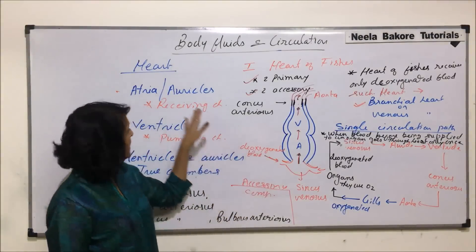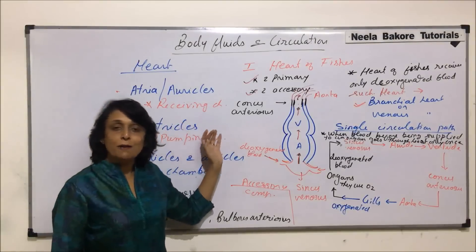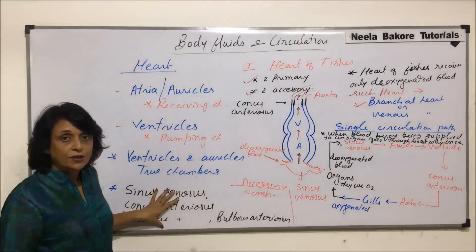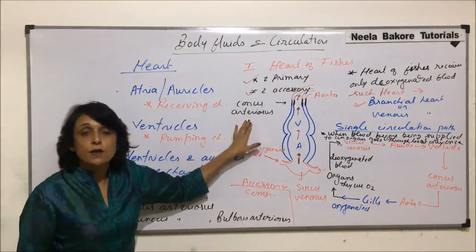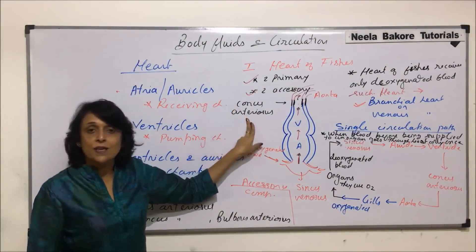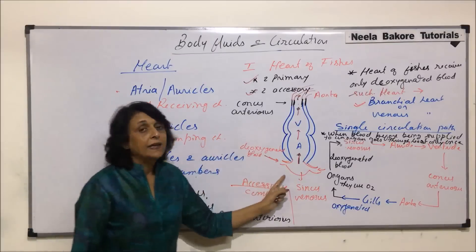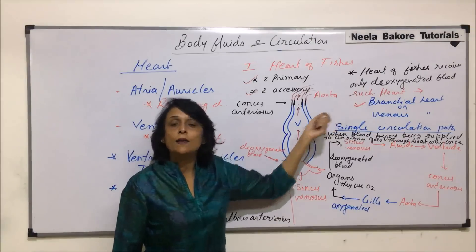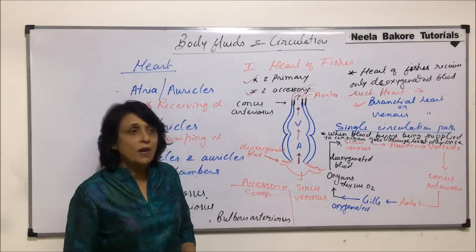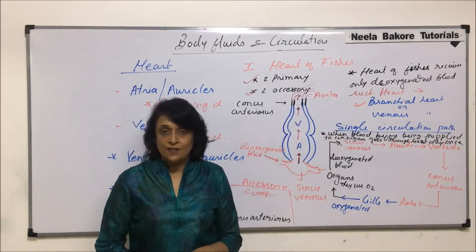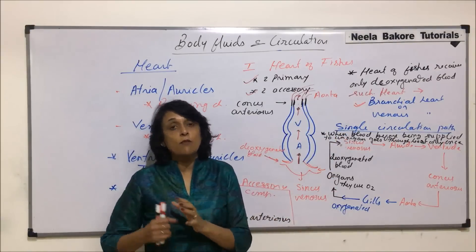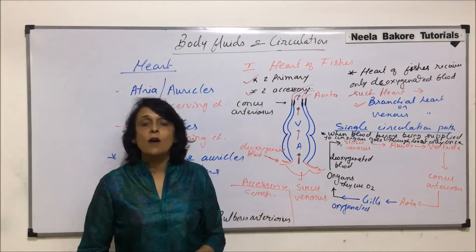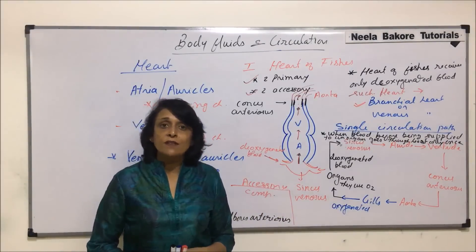To summarize: the heart has receiving compartments (auricles) and pumping compartments (ventricles) as primary chambers, and there are accessory chambers. In fishes, both primary chambers are present and the circulation is single circulation. Such a heart that receives only deoxygenated blood is known as a branchial heart or venous heart. In the next segment we will talk about the heart of amphibians and reptiles.